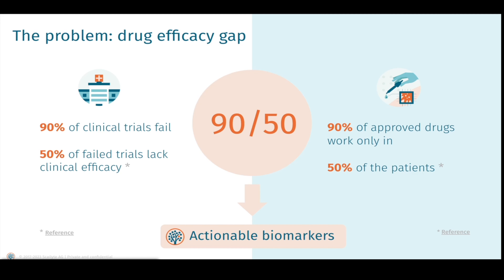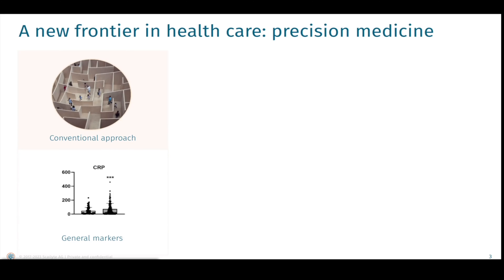What you need are biomarkers that inform this decision. What exists in the clinic in terms of biomarkers is a result of decades of R&D and consists of measurements of one or a few markers informing clinicians about some correlations. With the development of new drugs, clinicians are overwhelmed with finding the right treatment for the right patient because of the lack of sensitive and specific biomarkers.